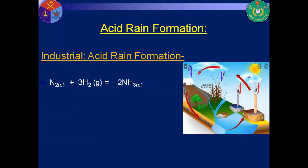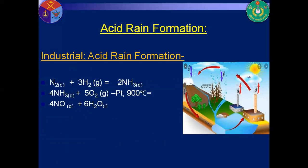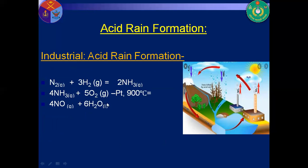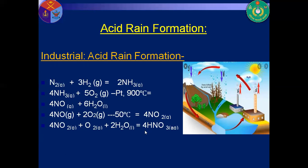Nitrogen is also converted to ammonia by the Haber-Bosch process in the presence of 500 degree centigrade temperature, 200 atmosphere pressure, and iron as a catalyst. The ammonia then reacts with oxygen to form nitrogen monoxide, and finally forms nitric acid.